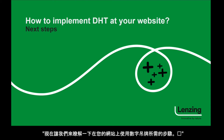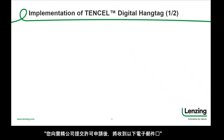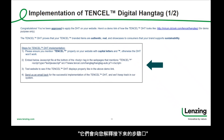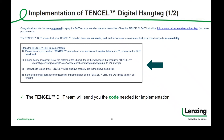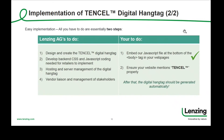Now let's find out about the steps needed to implement the Digital Hangtag at your website. After you have submitted a license application to Lenzing, you will receive a following email explaining further steps. Then, the Digital Hangtag team will send you the code that you need for implementation. All you have to do is embed your JavaScript file at the bottom of the body tag in your website and ensure your website mentions Tencel correctly. And that's it.